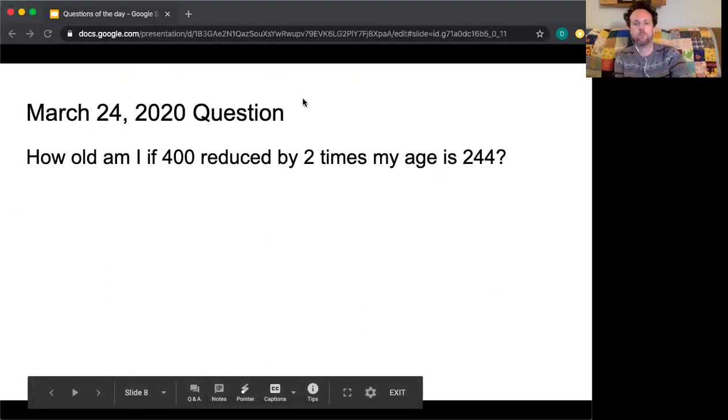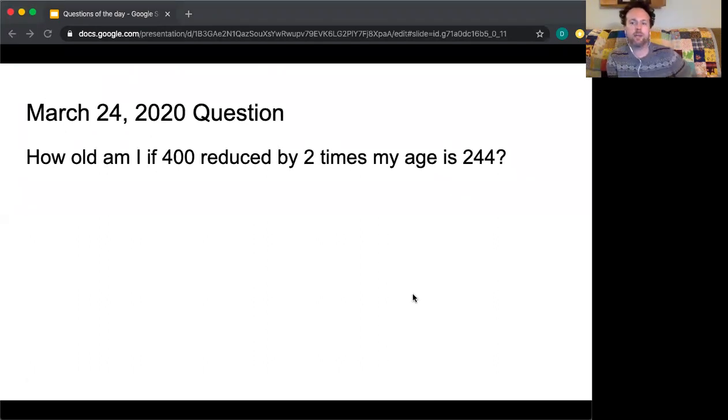How old am I if 400 reduced by two times my age is 244? Remember using our CUBES system, we first circle any numbers. So I've got the number 400, the number 2, and the number 244. Looking throughout, I don't have any other numbers in either word form or standard form, so I know I'm going to be using 400, 2, and 244.